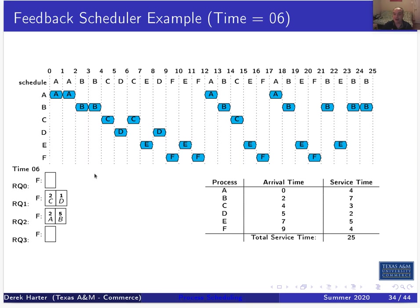At time six, nothing arrives. D gets preempted and goes to the end of priority level one. C is at the front of priority level one, so C gets scheduled until time seven. At time seven, C is preempted down to priority level two, and E arrives, entering at priority level zero. E gets scheduled for one time slice. Every time a new process arrives it runs immediately due to the time slice quantum of one.